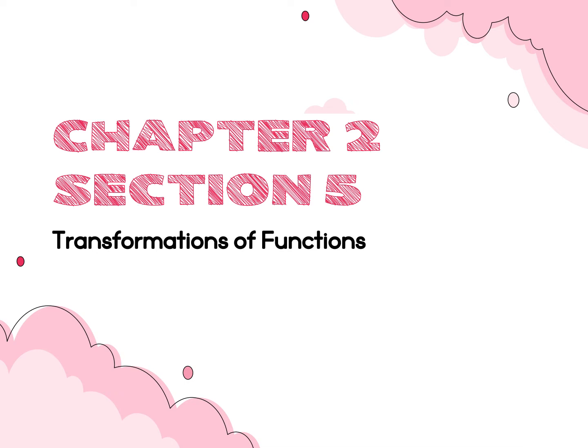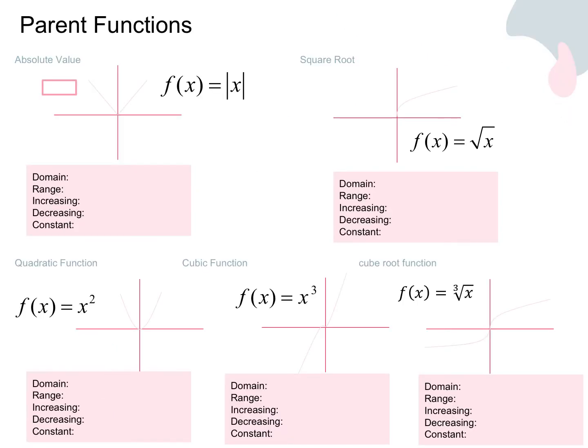Today we are going to learn how to graph functions other than a linear function. We already learned how to graph using y equals mx plus b or finding intercepts. Now we're going to be graphing all different types: the absolute value graph, a square root graph, a quadratic function, an x squared graph, an x cubic function, and a cube root.